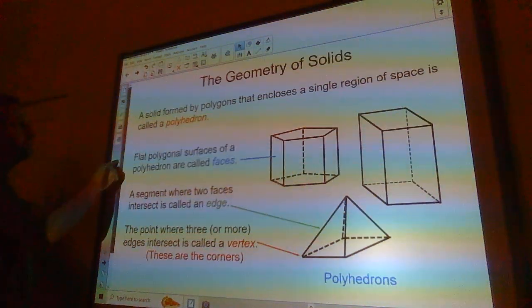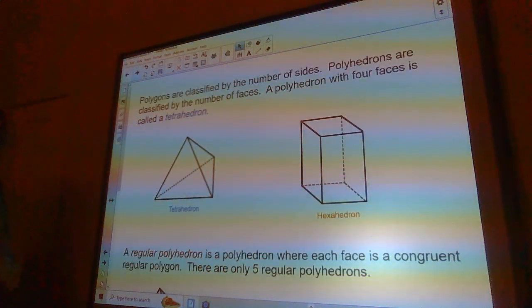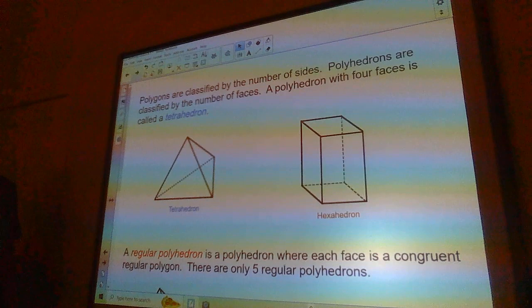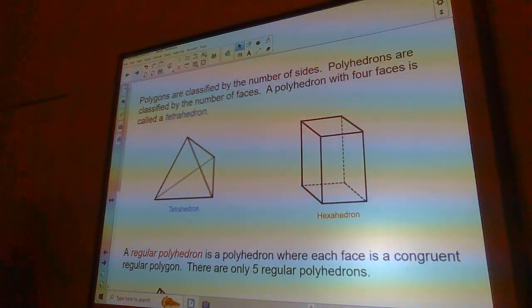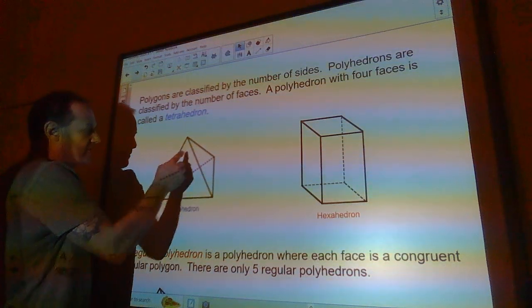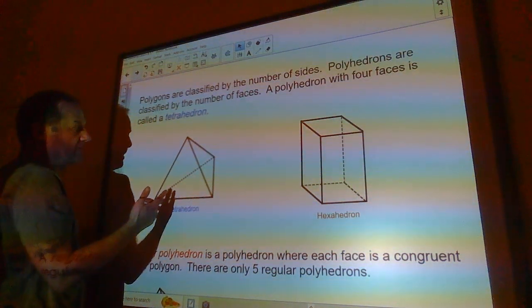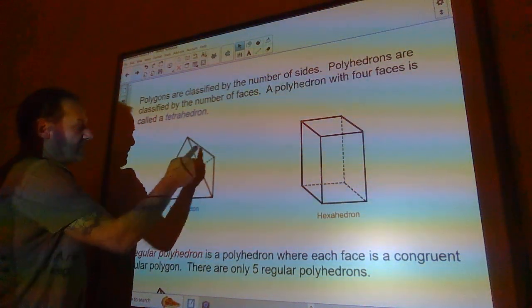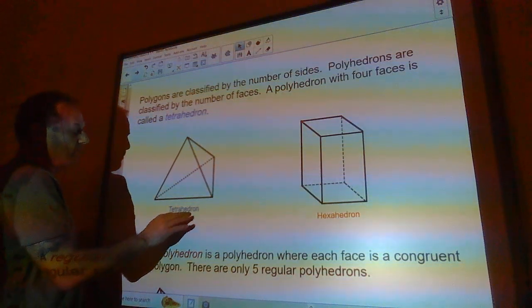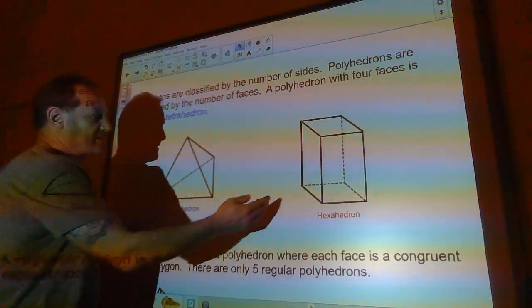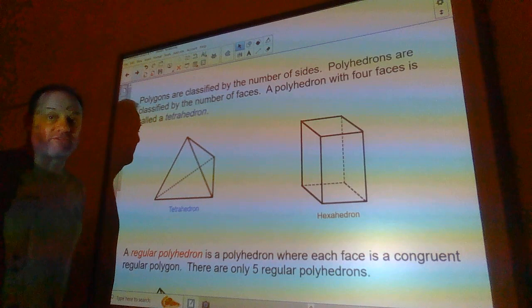Polygons are classified by the number of sides they have. Polyhedrons are classified by the number of faces. So a triangle you would classify it as a triangle because there's three sides. But this is a tetrahedron. Tetra means four. It's got four faces. This is a hexahedron because it has six faces.